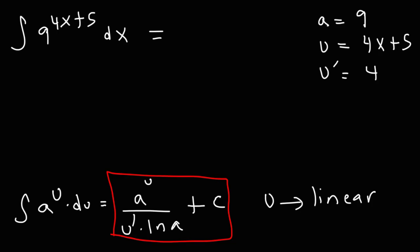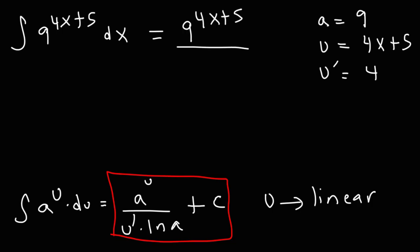The derivative of 4x is 4, and the derivative of the constant 5 is 0. So this is going to be a to the u, which is 9 raised to the 4x plus 5, divided by u prime, which is 4, times ln a, or ln 9, plus c.